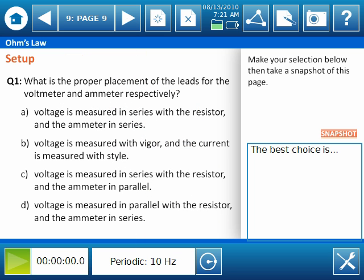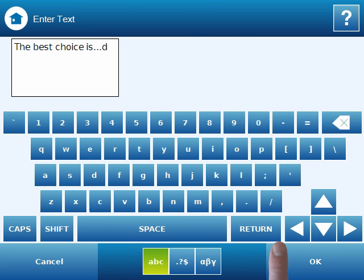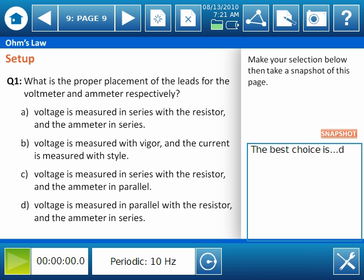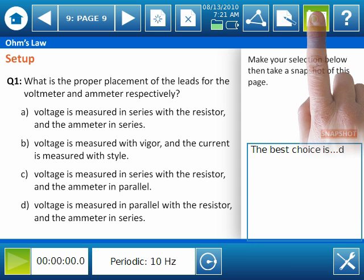To check student understanding and ensure they are vested in each part of the Spark Lab, quick self-check questions are spread throughout the labs. To answer the questions, select the blue text entry box and enter your answer. Again we see the snapshot icon on the page, so we'll select the snapshot button to enter this page into our journal.